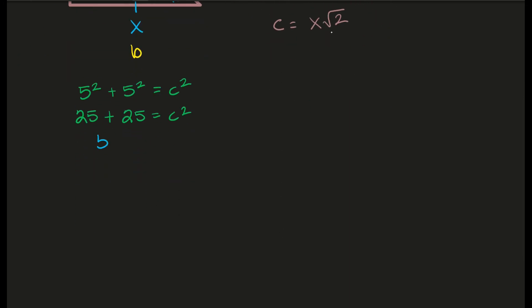25 plus 25 we know is 50. This equals c squared. I want the value of c by itself. So I can take the square root. So c is going to equal, now you have the square root of 50.